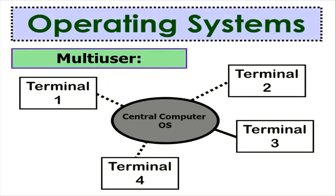In this diagram of a multi user operating system, we can see different terminals. In the center there is the multi user operating system, and Terminal 1, Terminal 2, and Terminal 3 — different terminals meaning different computers — are all communicating with the centralized multi user operating system.